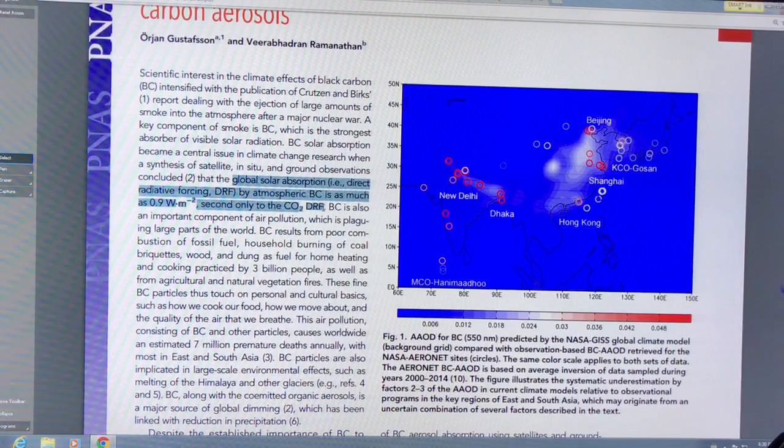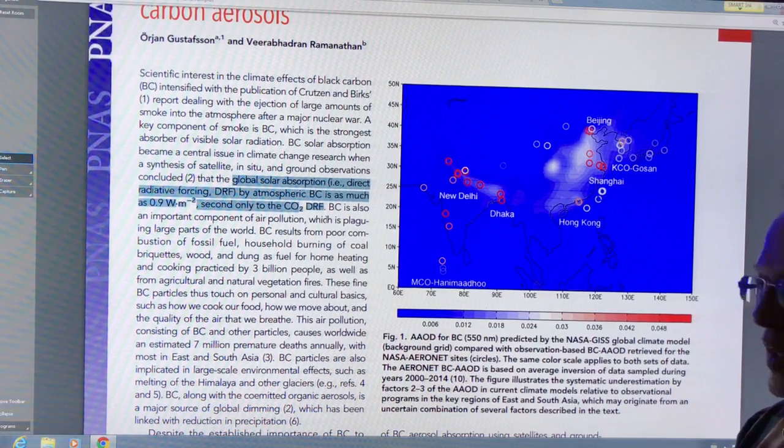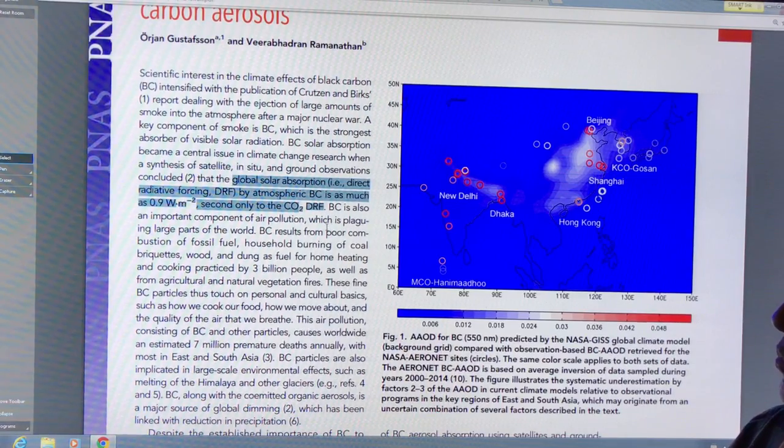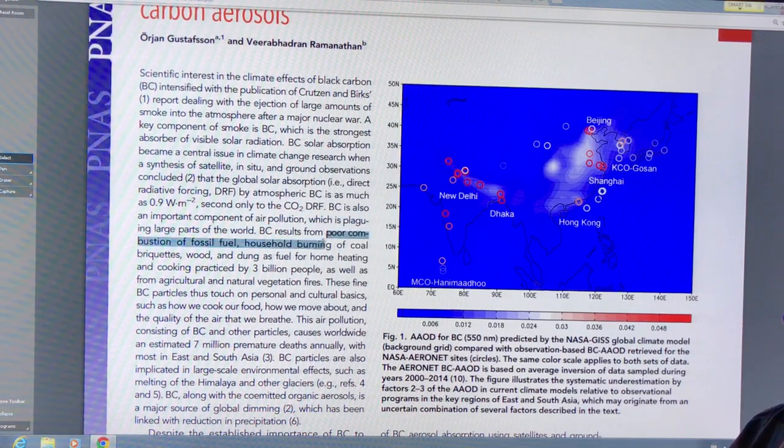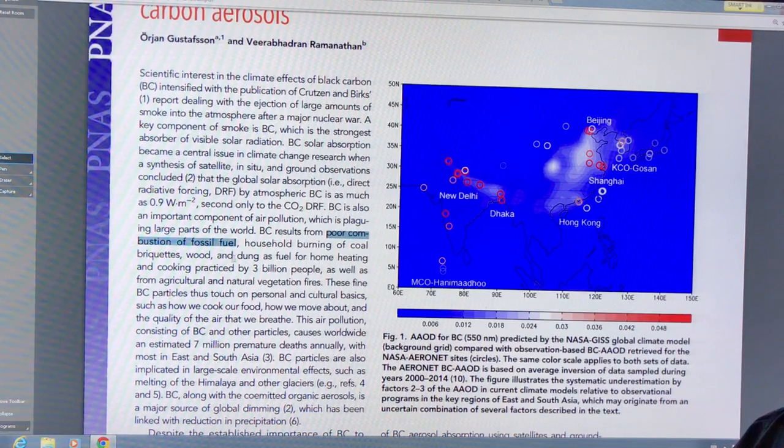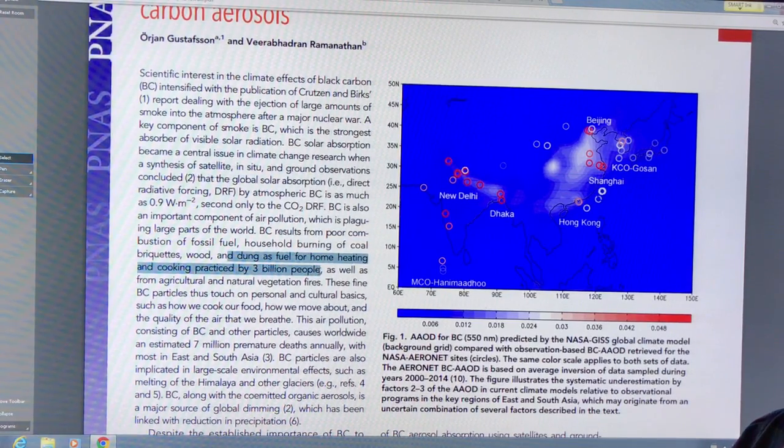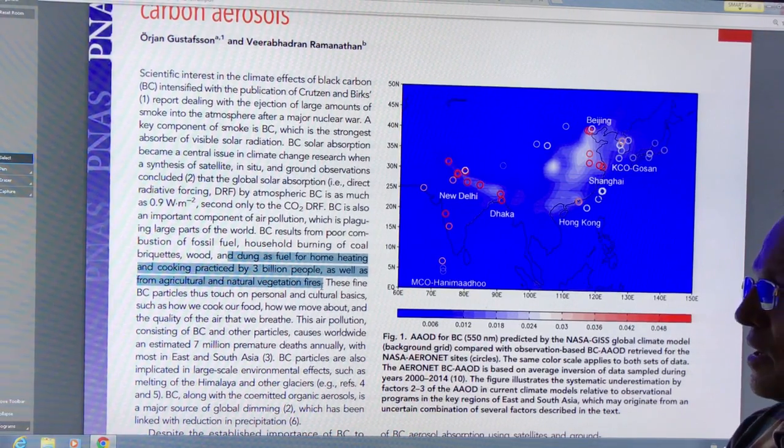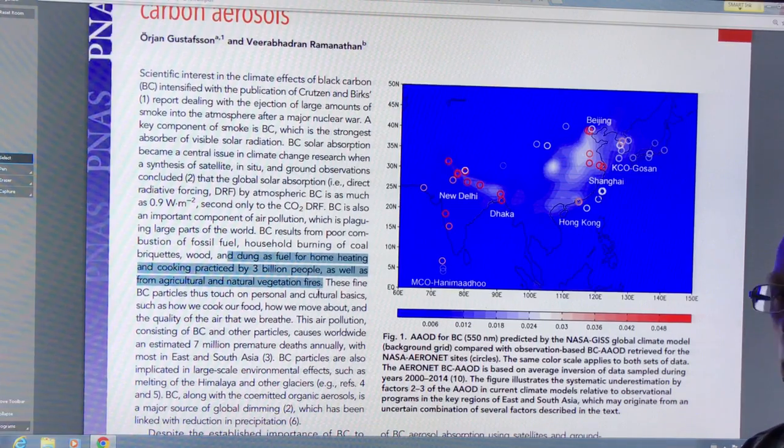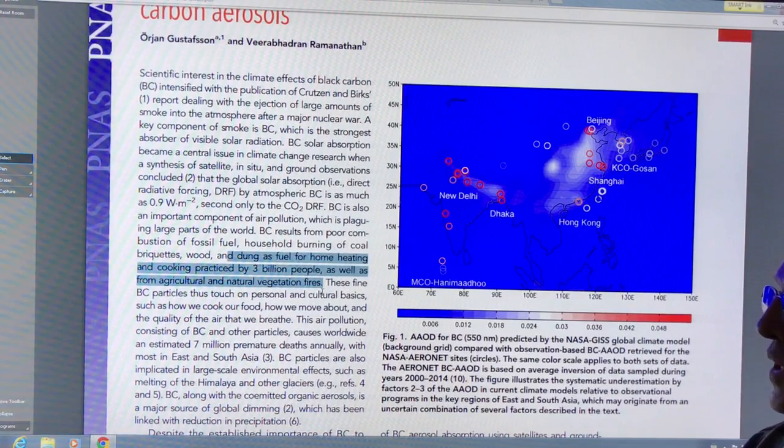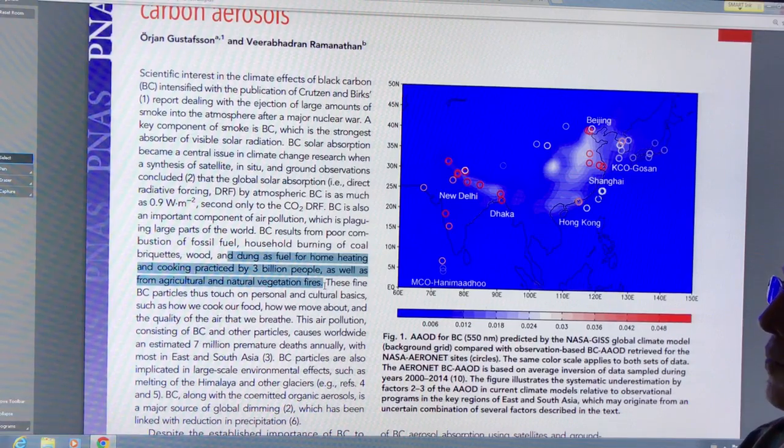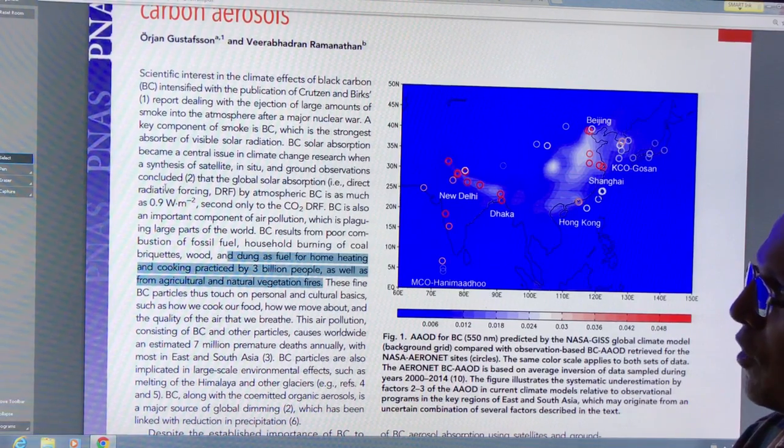It will cause tremendous amounts of warming because the light is being absorbed by particles in the atmosphere, not reflected back to space. It's an important component of air pollution plaguing large parts of the world. Incomplete combustion of fossil fuel produces it, as does household burning of coal, briquettes, wood, and dung for heating and cooking by three billion people, plus agricultural and natural vegetation fires. We're getting more fires in boreal forests, rainforests, and the tundra. These release CO2 or methane, but also black carbon particles, which have huge radiative forcing second only to CO2.